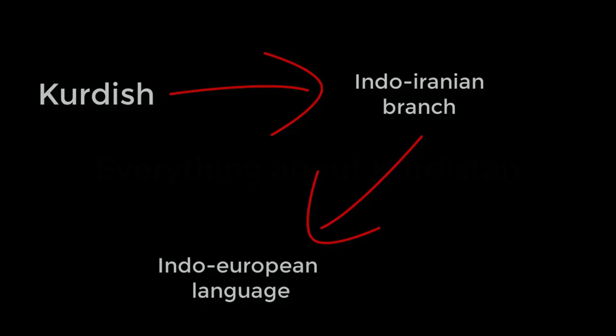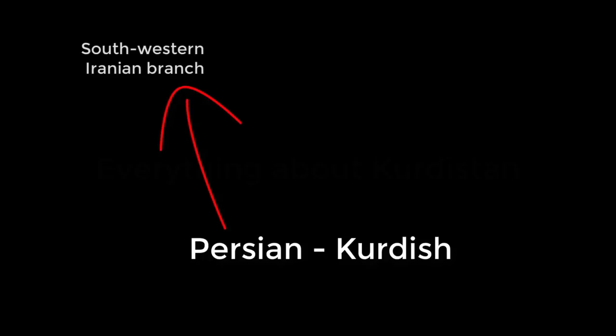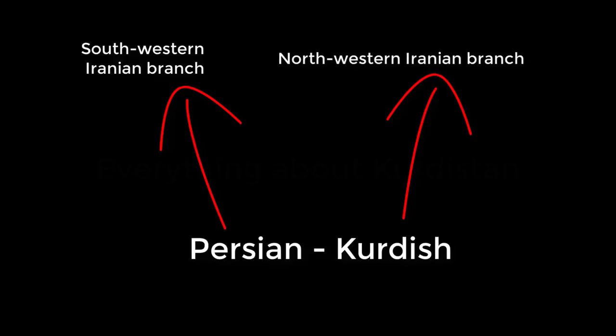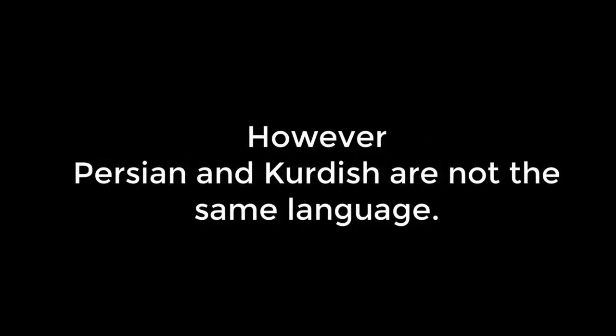The difference between Persian and Kurdish is that the Persian language belongs to the southwestern Iranian branch, while the Kurdish language belongs to the northwestern Iranian branch. There are many similarities between the Persian and Kurdish languages. However, these two are today two different languages spoken by two different peoples.